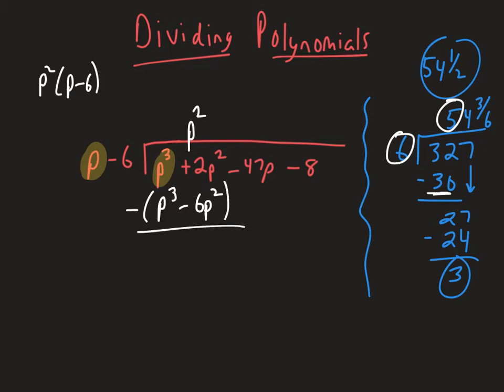And then we're going to subtract. So p cubed minus p cubed is 0. Be careful here now on the second one. It's 2p squared, but we're subtracting negative 6p squared. So when you subtract negative, we're really adding. So 8p squared, and we will bring down the next term, which is minus 47p.